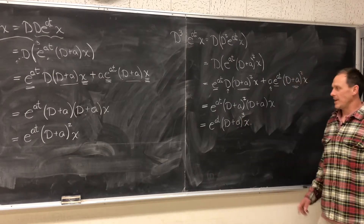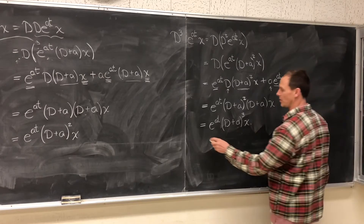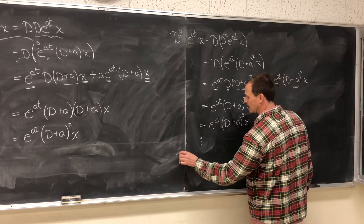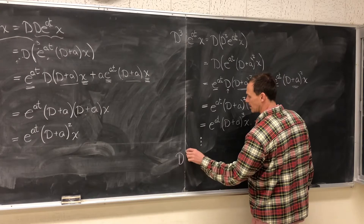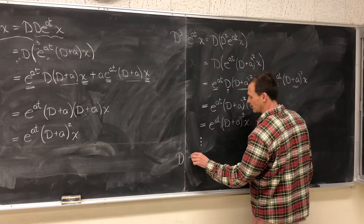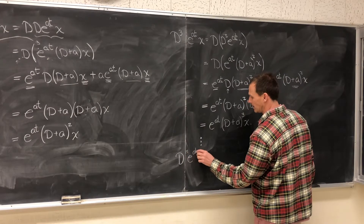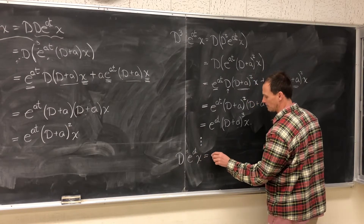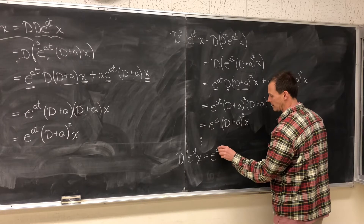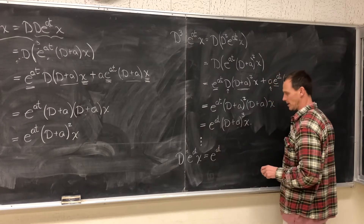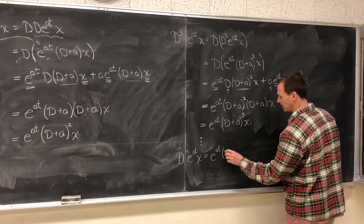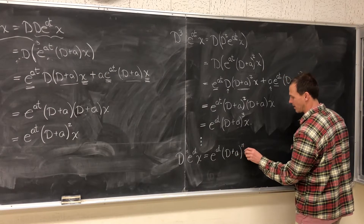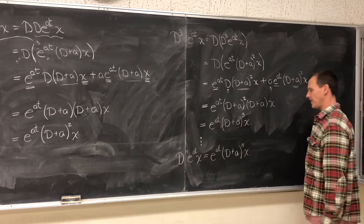You can continue this pattern further. If we were to generalize, we can say that D^n applied to e^(at)·x is simply e^(at) times (D+a)^n times x.